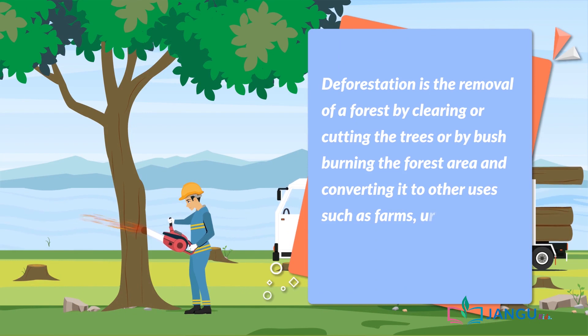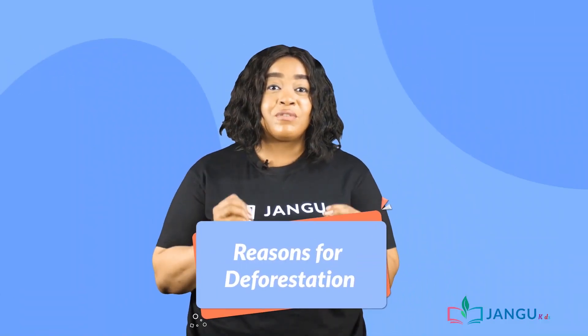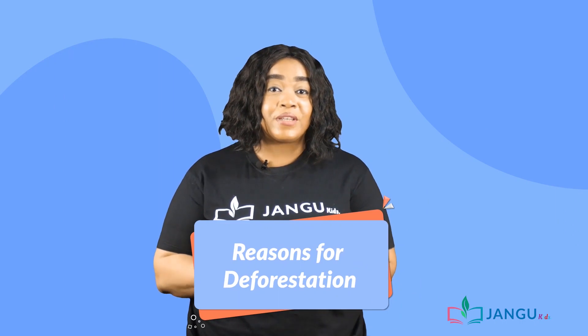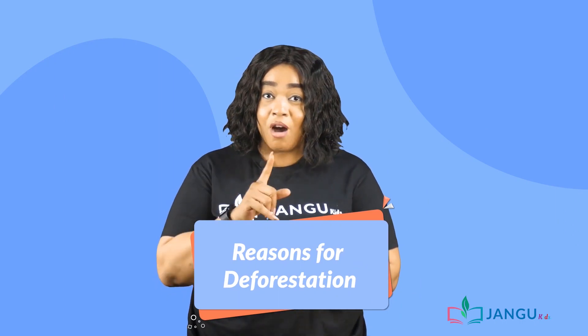Deforestation is the removal of forest by clearing or cutting the trees, or by burning the forest area and converting it into other use such as farms, urban use, etc. There are various reasons why deforestation happens.